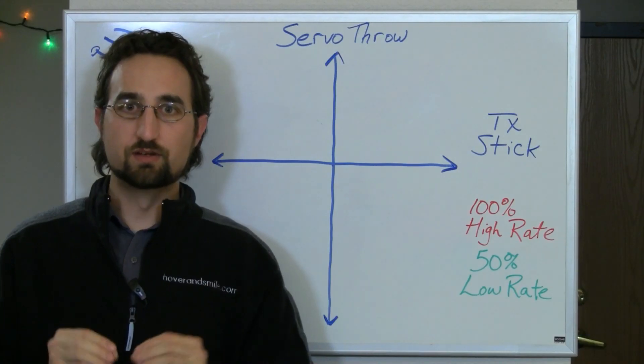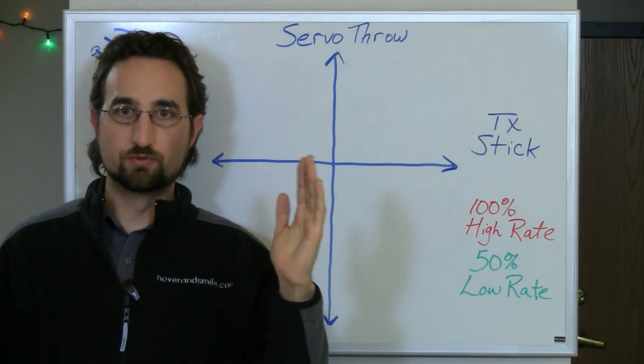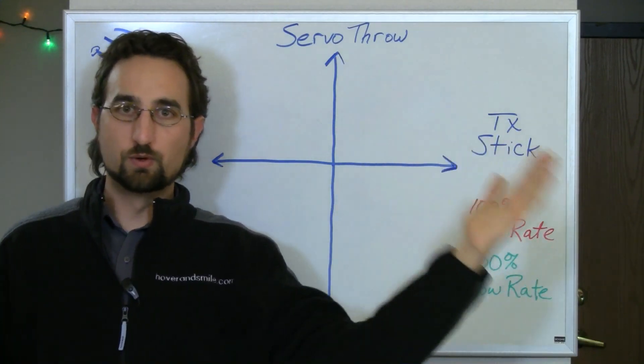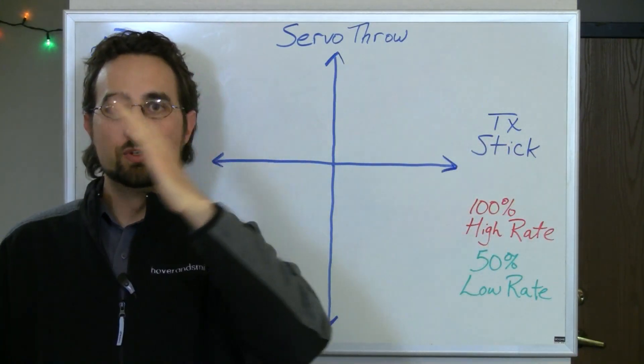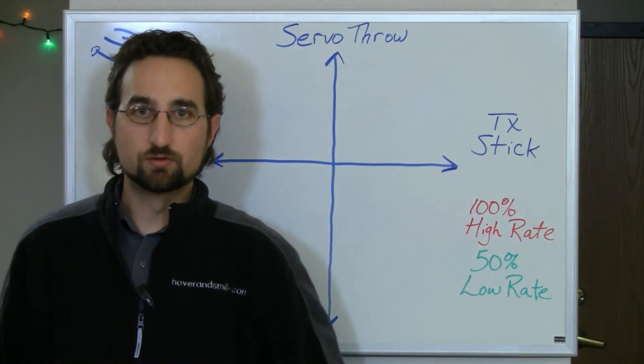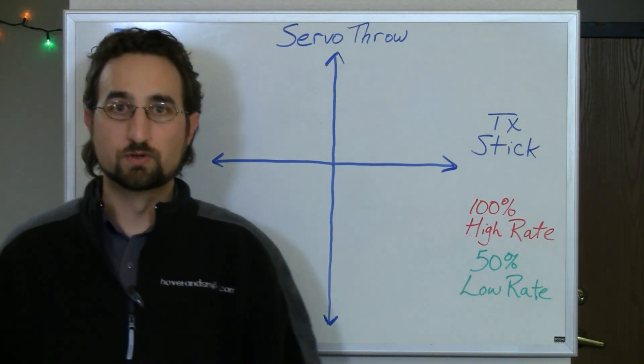So that's the key definition here is to know that servo arm throw, and that is when you have your transmitter all the way at one end, the servo arm is moving here, and then when you move your transmitter all the way to the other end, the servo arm is here at its opposite side. And of course when it's centered, it's centered for both transmitter stick and the servo.